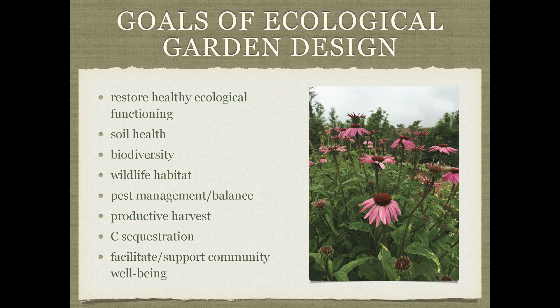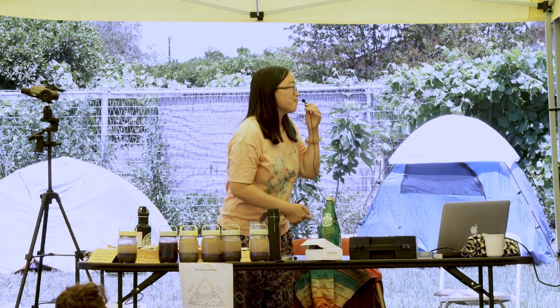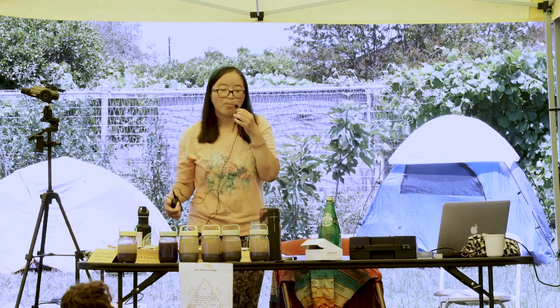Pest management and balance are supported by biodiversity and wildlife habitat, which also support a productive harvest. We have many diverse pollinators — not just honeybees, but many species of native bees, wasps, and hummingbirds — so we want to create support for pollinators to have a more productive harvest. Carbon sequestration happens not just with soil management but also with the plant ecology above ground, so our above-ground practices can support carbon sequestration in the soil as well.